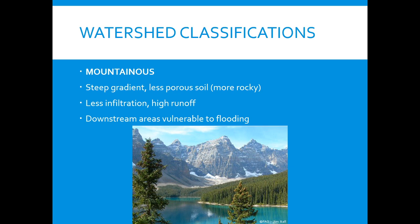Mountainous watersheds have steep gradients. The soil is typically more rocky, so it doesn't allow as much water in — meaning lower infiltration and a high amount of runoff. When winter snow melts, we typically see a high amount of runoff, and you can see that in the Truckee River. Downstream areas are also vulnerable to flooding, as you can see in the Truckee River.